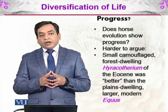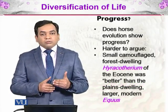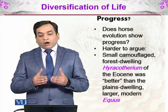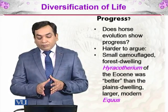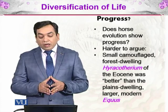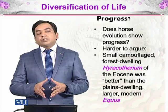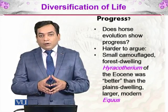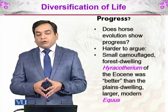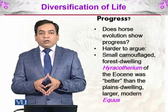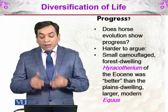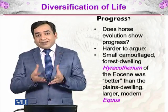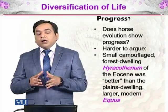Does horse evolution show progress, even though the trend shows decreased toes and increased size? It is harder to argue. The small camouflaged forest-dwelling Hyracotherium of the Eocene may have been better adapted than the plain-dwelling larger modern Equus, because they could camouflage themselves from predators. However, this is not the only factor that tells us whether a species is progressing. Whether the Hyracotherium is less advanced than Equus today is debatable — progress from an earlier to a later life form is not always clear.